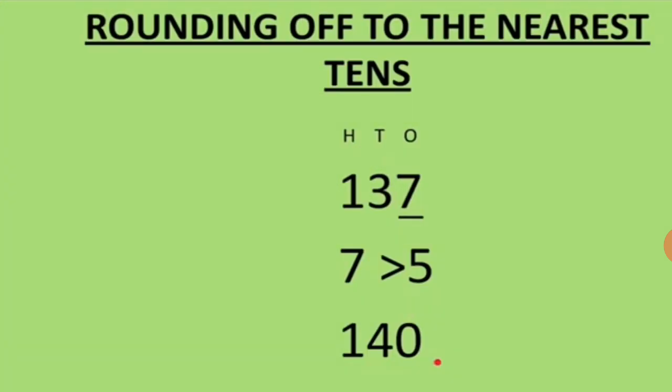The first question is to round off to the nearest tens. Here we have to round off the number to the nearest tens. The number is 137. We will look at the number that is to the right of the tens place, which is the number 7.